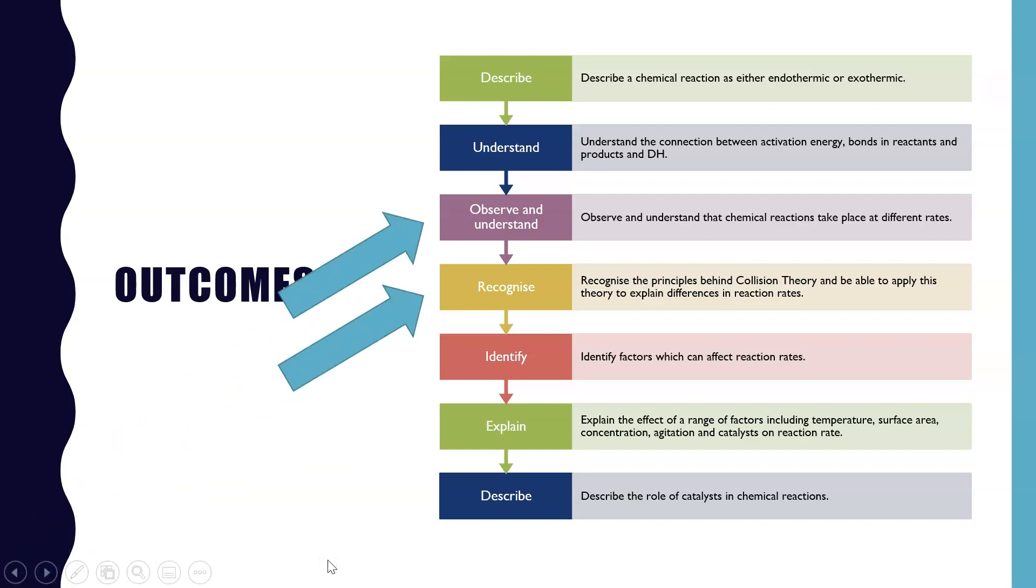The outcomes that we'll be covering in this video are outcomes three and four where we observe and understand that chemical reactions take place at different rates. We'll be looking at that in this video and the next one. You're also going to recognize the principles behind the collision theory and be able to apply this theory to explain different reaction rates.